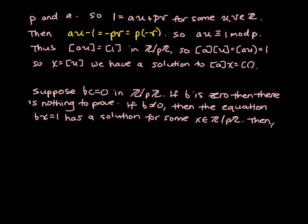Then we get the following. We have that 0 is going to be equal to x times 0, and 0 is equal to b times c, so we get x times bc. We can use associativity to rewrite this as x times b times c. We use commutativity to write this as bx times c. And then b times x equals 1. We show that this equation has a solution. And so we know that bx equals 1, but then we get 1 times c, which is just equal to c.